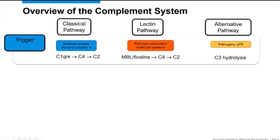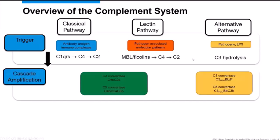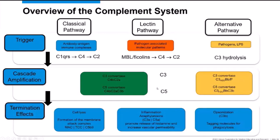The unique molecules are C1q for the classical pathway, mannose-binding lectin or ficolins for the lectin pathway, and in the alternative pathway, C3 spontaneously hydrolyzes. All pathways converge to amplify their signal once initial C3 is cleaved. C3 convertases target more C3 cleavage, and C5 convertases cleave C5, with different convertase systems for each pathway but the same function.